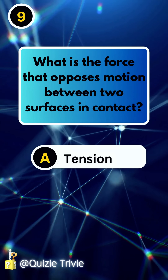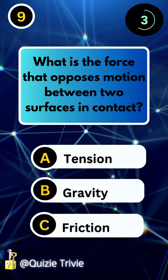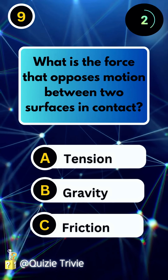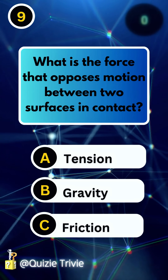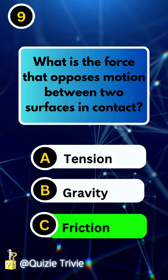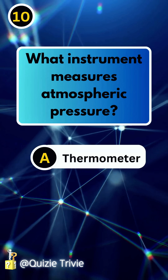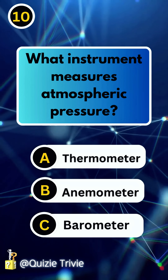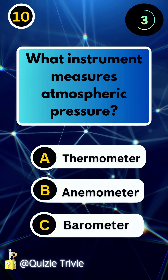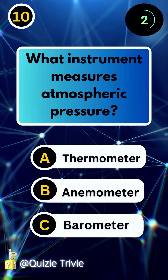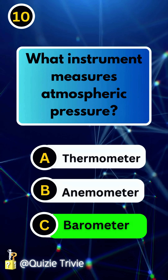What is the force that opposes motion between two surfaces in contact? Friction. What instrument measures atmospheric pressure? Barometer.